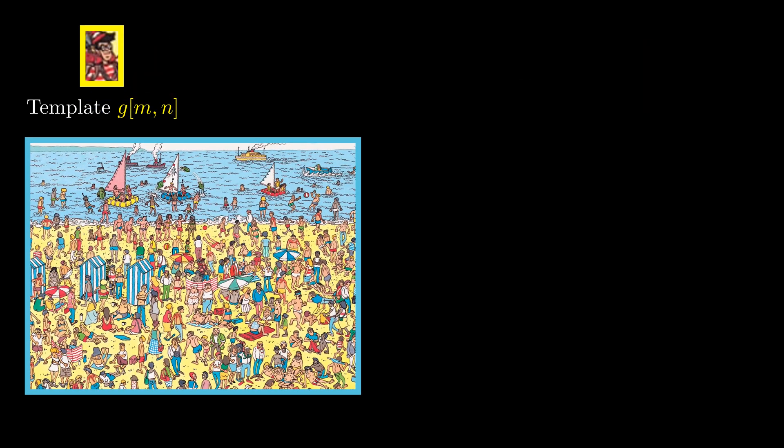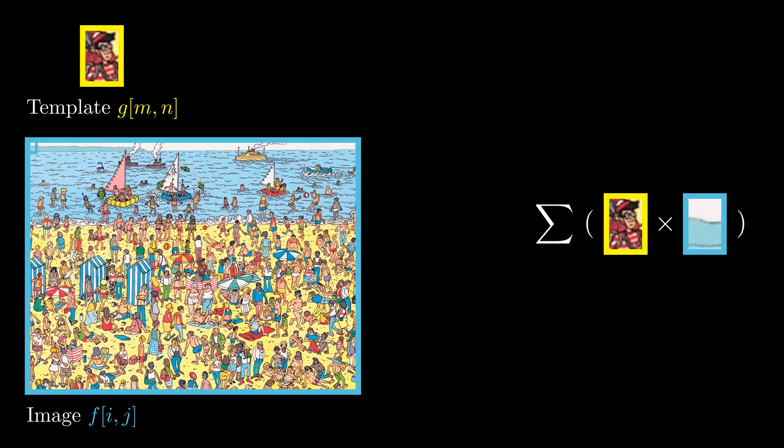Now, our goal is to find where Waldo is in a larger image. But how do we do that? Let's try image filtering with our template as the filtering kernel. Here is how it works. We extract an image patch, multiply it element-wise with our template, and sum up the values across all pixels.